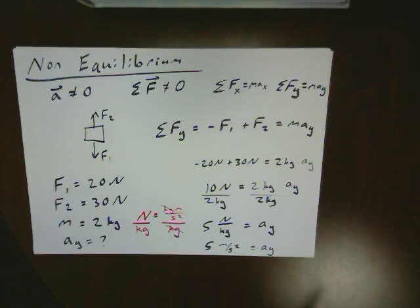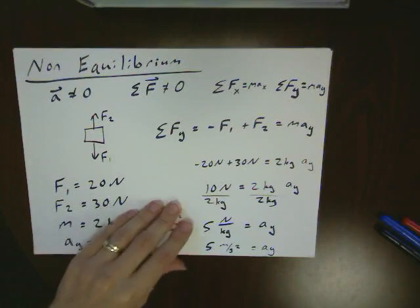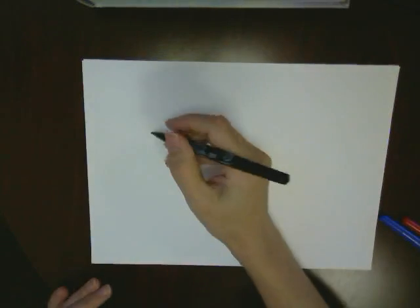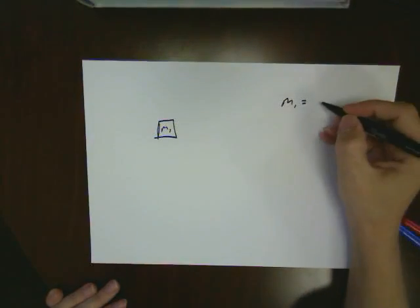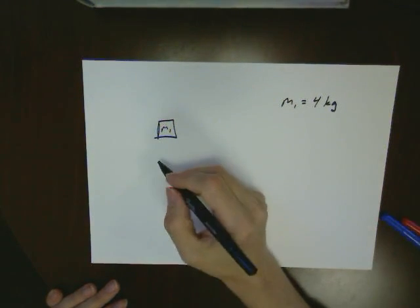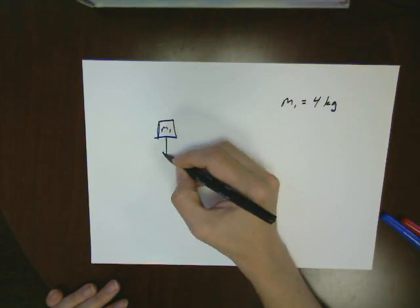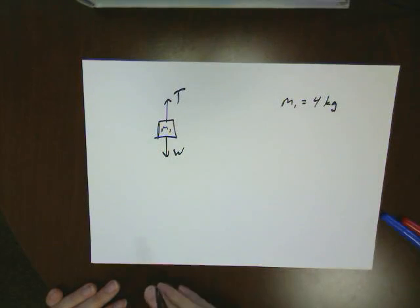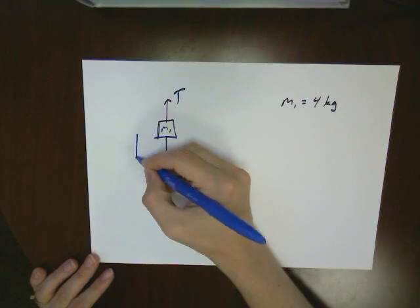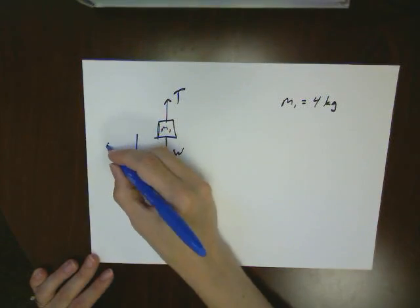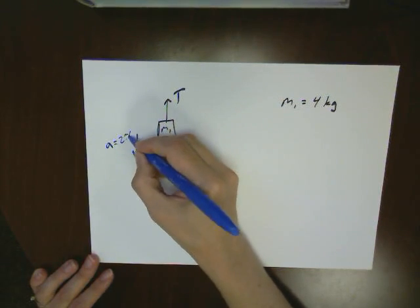So in this case, we knew all the forces and we were trying to find the acceleration. Let's take a look at a similar situation, but where I'm trying to find one of the forces. So I might have a problem where I've got an object, mass 1. That mass 1 might be 4 kilograms this time. And let's say I've got two forces acting on it, a weight and a tension. So this is an object which is hanging from a rope, perhaps. Now let's say I'm actually told that this box hanging from this rope is moving downwards and not only is it moving downwards, it has an acceleration downwards of 2 meters per second squared.